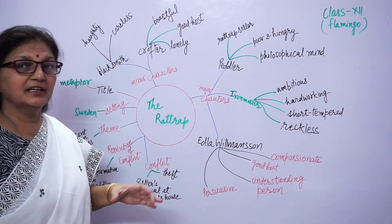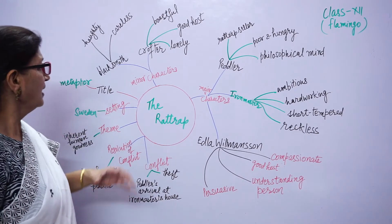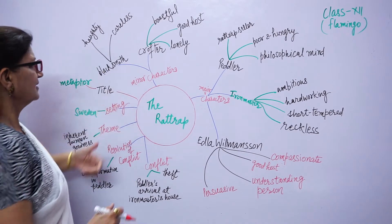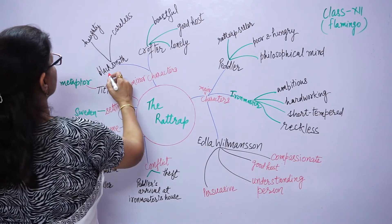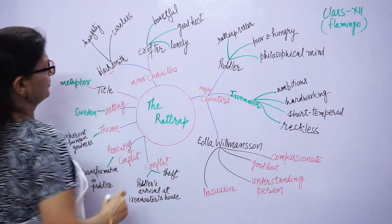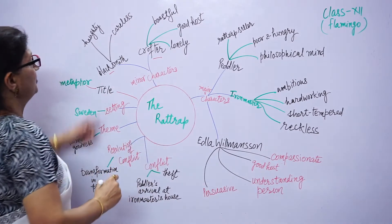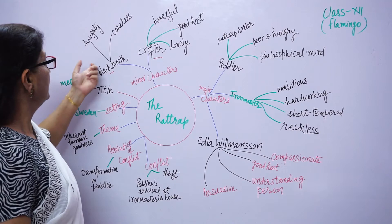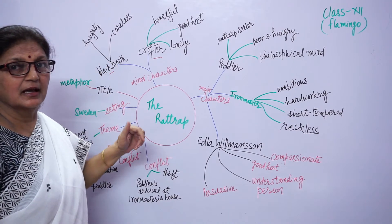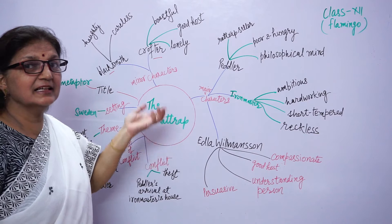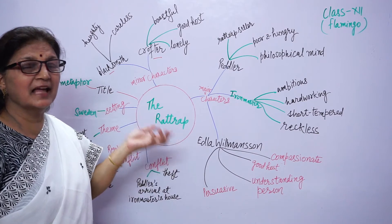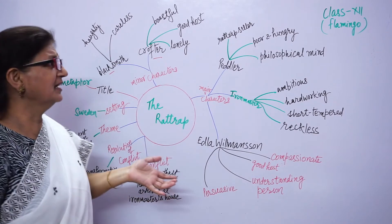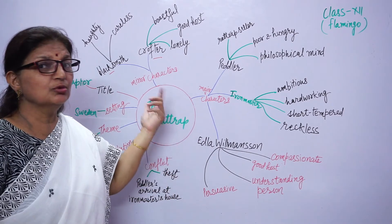Characters are very important in the story. First we will see minor characters. Two characters: Blacksmith and Crofter. Blacksmith in Ramso Iron Mill. He is haughty and careless. He doesn't answer the peddler in a nice way. He doesn't even look at him. He didn't care who the person was. He just nodded.